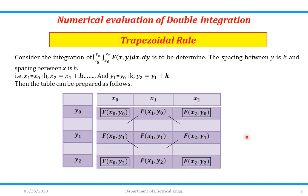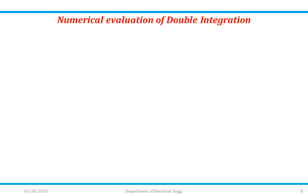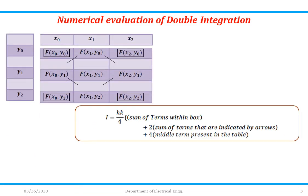Based on this table we can write the formula. The formula is hk/4, where h and k are the spacings between x and y respectively. We take the sum of terms within the box — the four corner values — plus 2 times the sum of the terms indicated by arrows: f(x1,y0), f(x2,y1), f(x1,y2), and f(x0,y1). Then add 4 times the middle term, which is f(x1,y1).